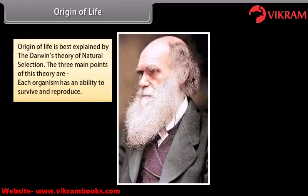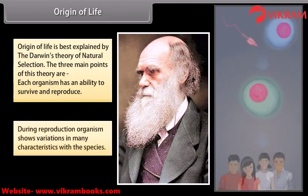The origin of life is best explained by Darwin's theory of natural selection. The three main points of this theory are: each organism has an ability to survive and reproduce; during reproduction, organisms show variations in many characteristics within their species.